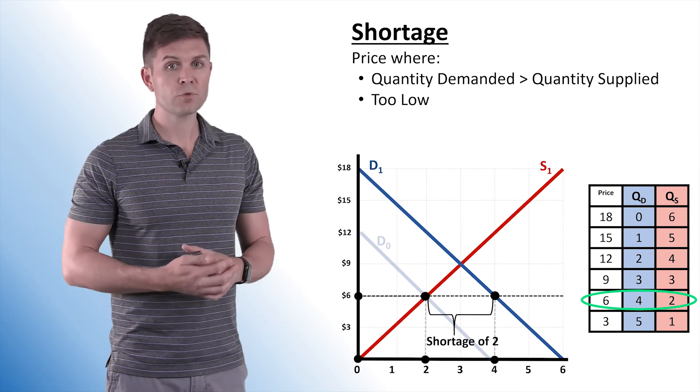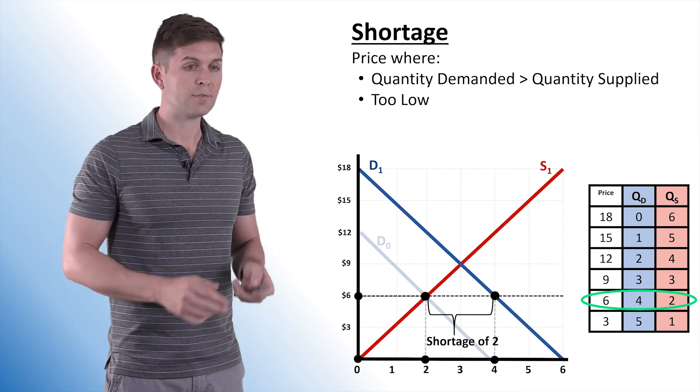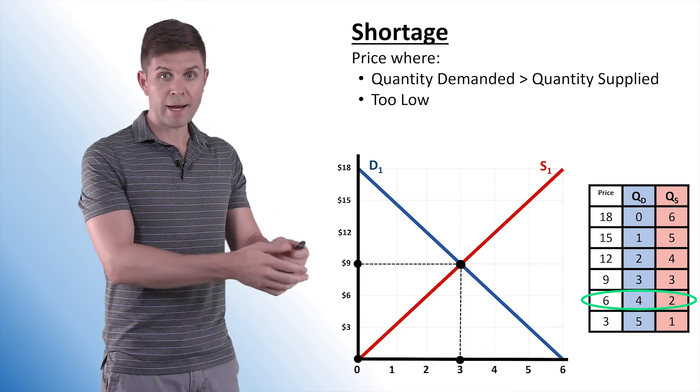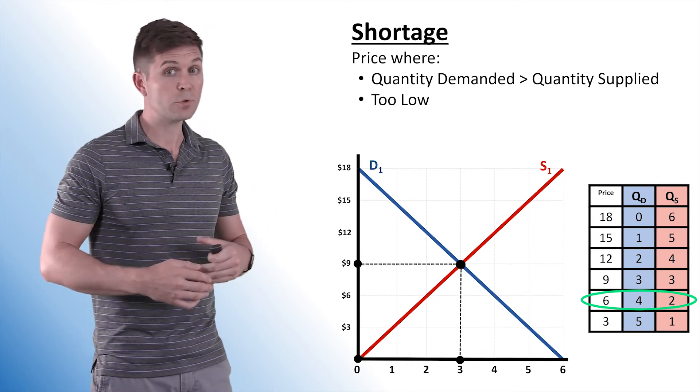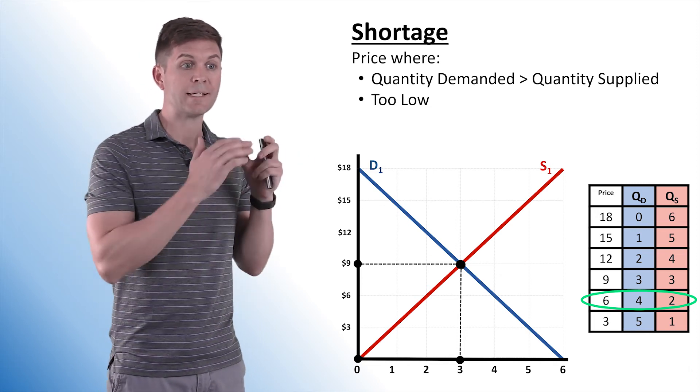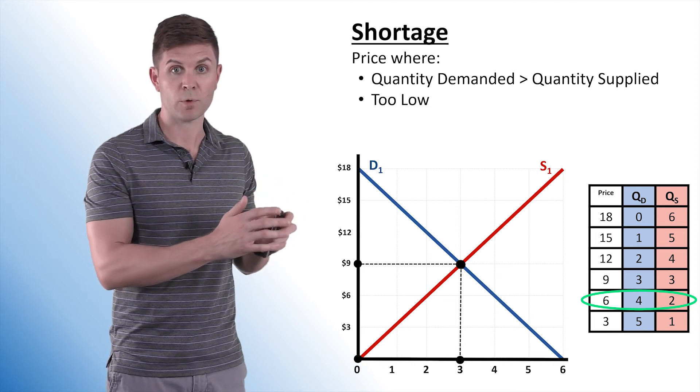Eventually, producers will understand that they can raise the price a little bit. And in doing so, that discourages purchases. Buyers will buy a little bit less. And producers will produce a little bit more, increasing the quantity supplied, decreasing the quantity demanded, and getting us back to that equilibrium one more time.